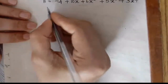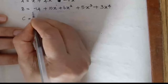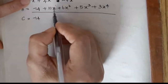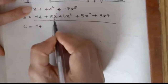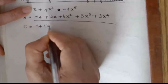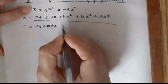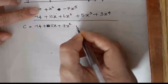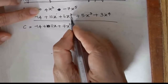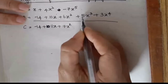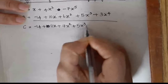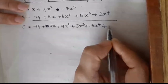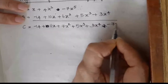For example, let A equal x plus 4x squared plus minus 7x raised to 5, and B equal minus 14 plus 10x plus 6x squared plus 5x raised to 3 plus 3x raised to 4. The result C will contain: minus 14, then 11x, then 10x squared, then 5x raised to 3, then 3x raised to 4, then minus 7x raised to 5.